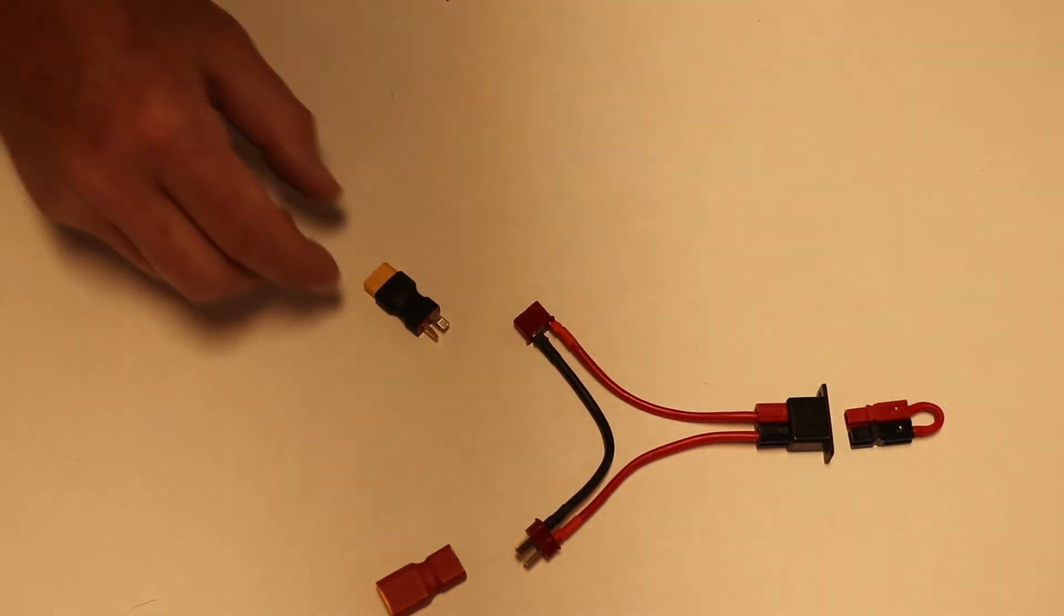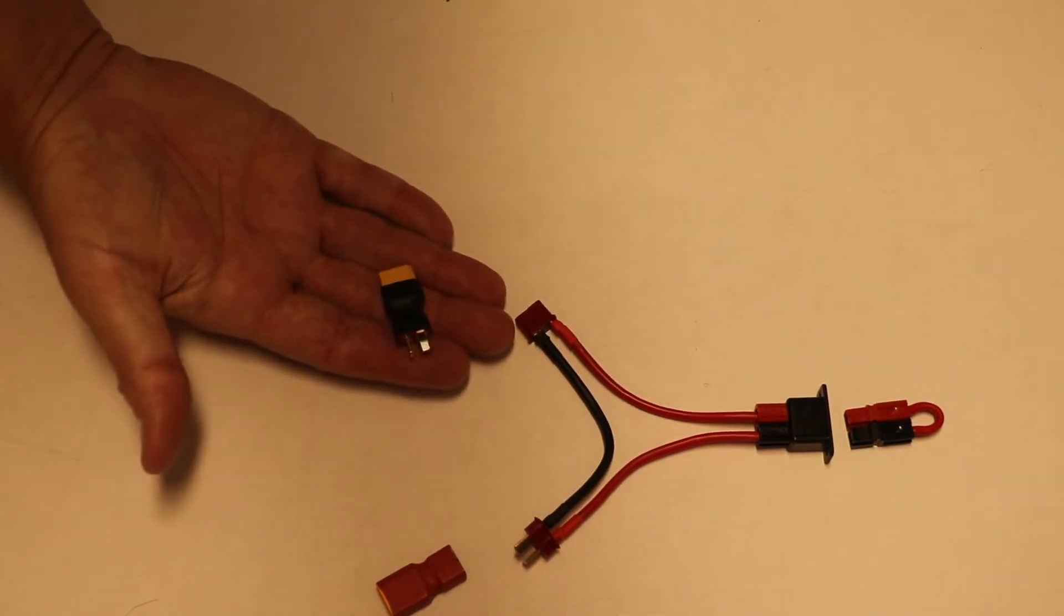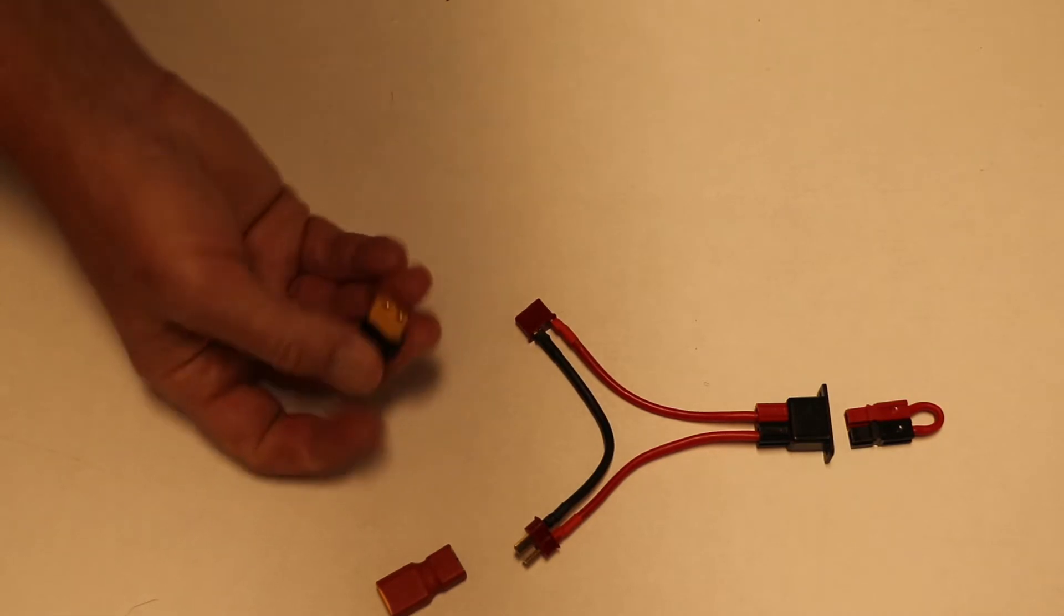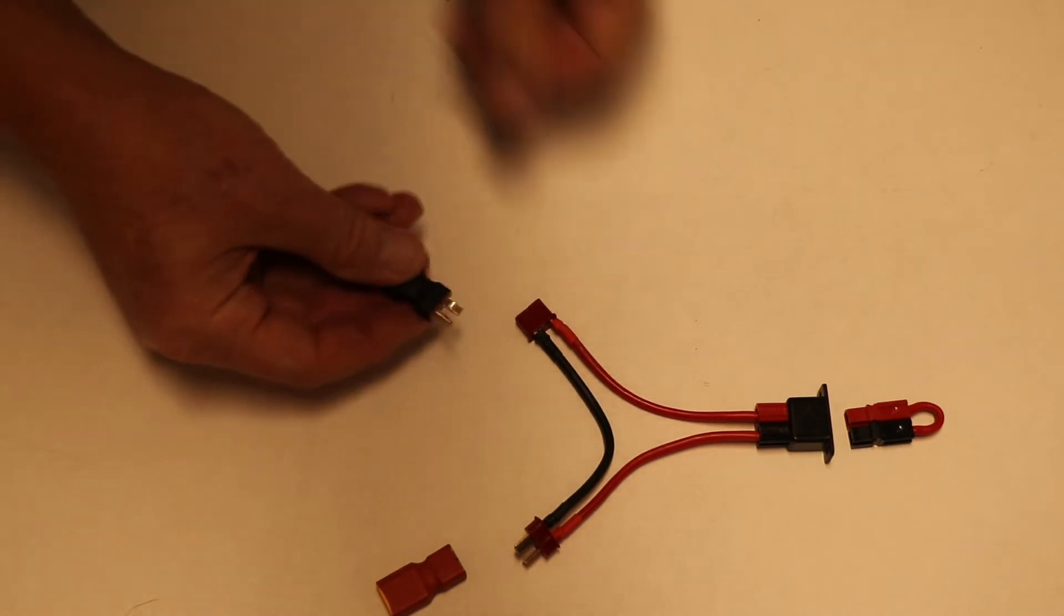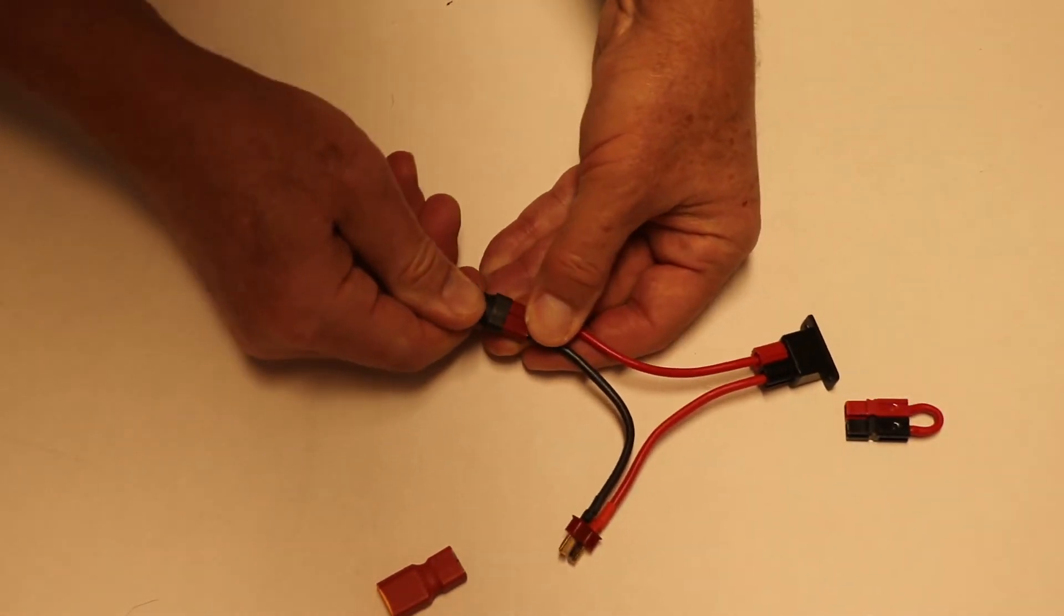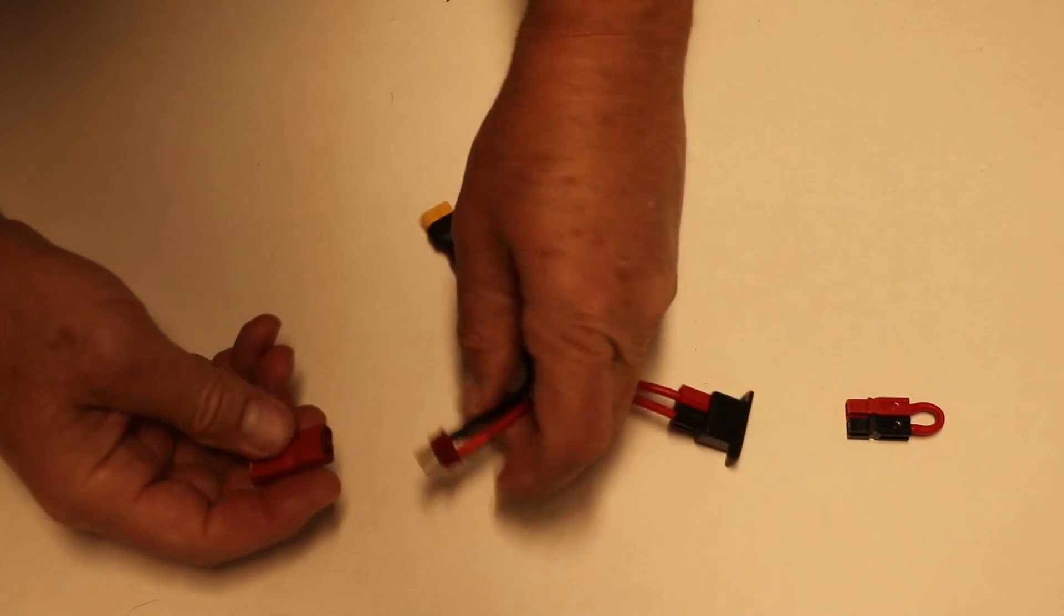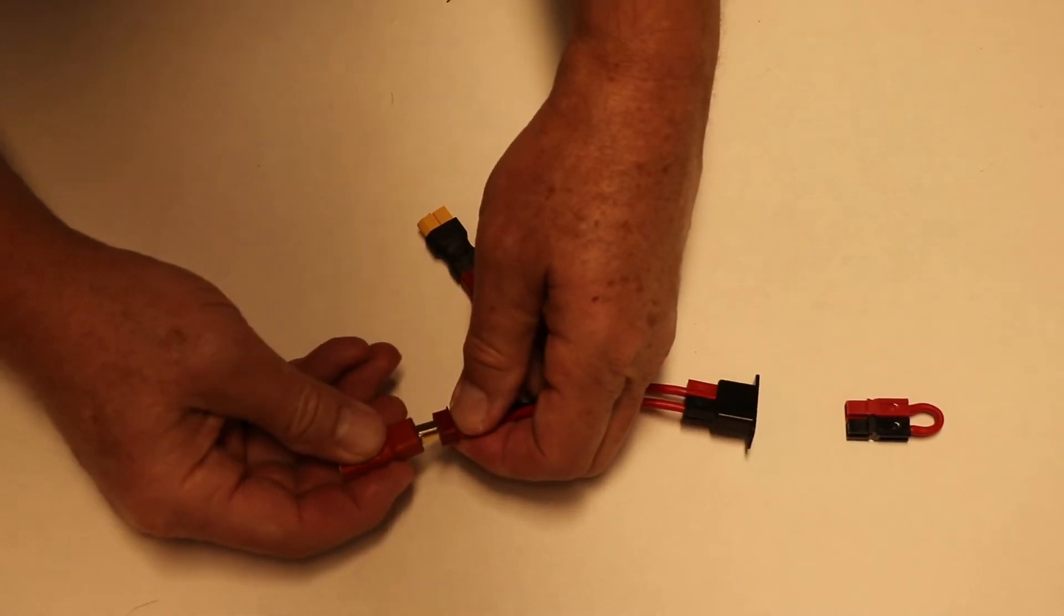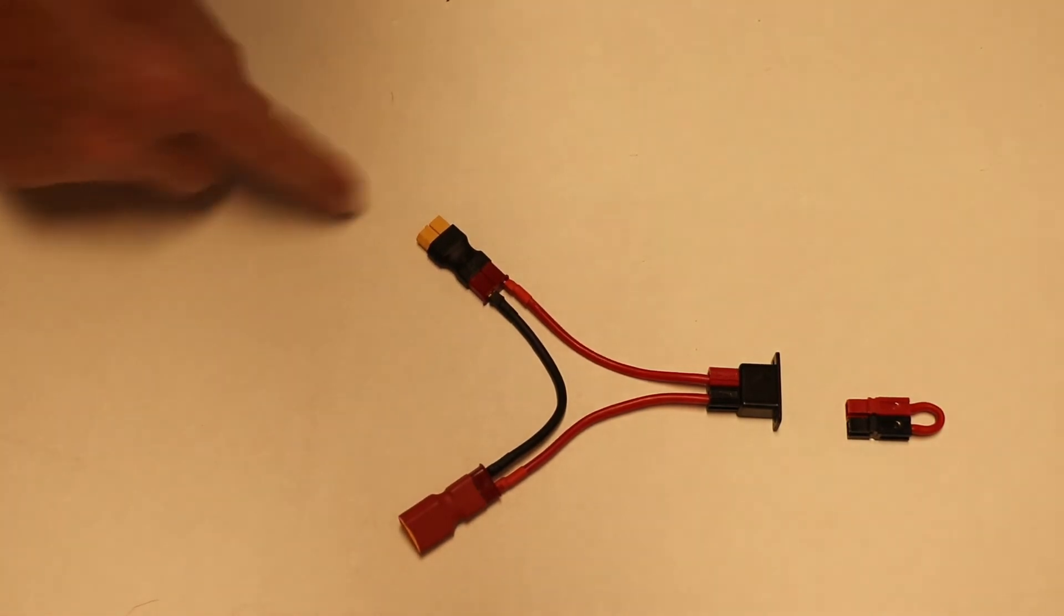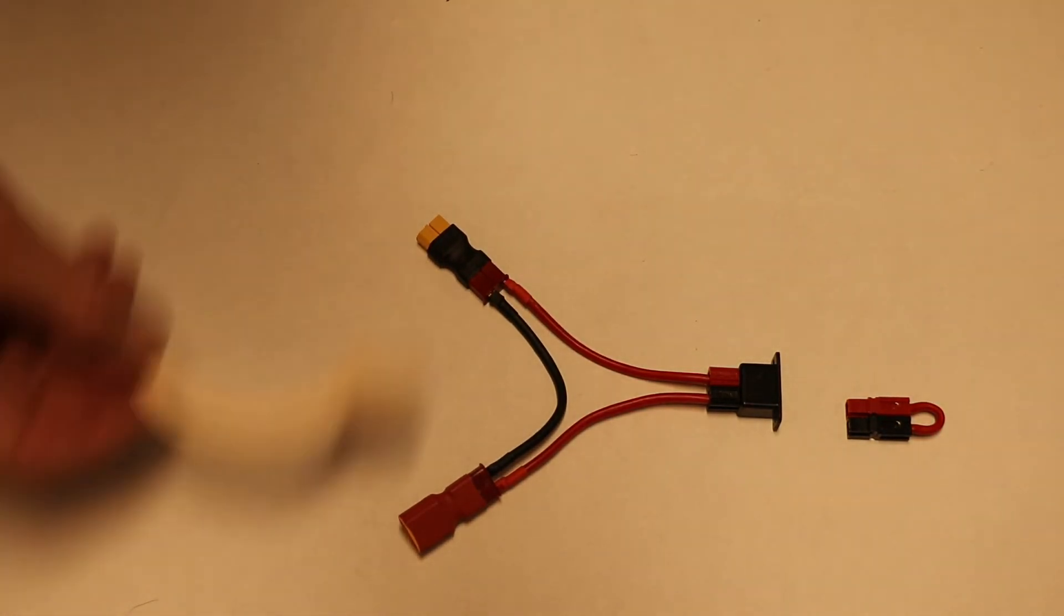If you do want to convert, you can get these. These are a Dean's connector here and an XT60 on the other end. They simply plug into the Dean's, and then now you have an XT60 on both ends.